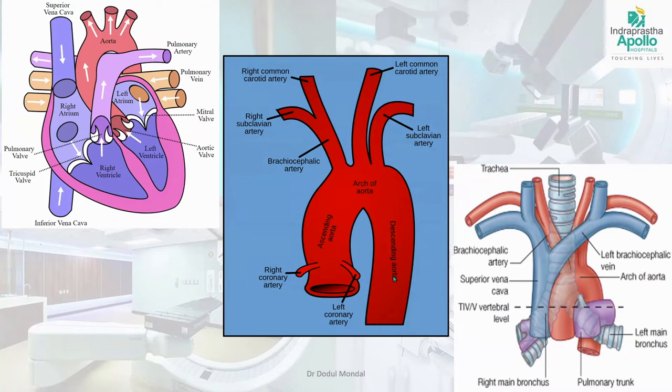Before we start, whatever vascular anatomy we discuss, we should have some basic idea about the cardiac chambers. This is a basic schematic representation of the heart: the right ventricle connected with the right atrium, the left ventricle, and the left atrium. From the right ventricle the pulmonary trunk arises, dividing into left and right pulmonary artery. From the left ventricle, the ascending aorta arises, becoming the arch aorta, then the descending thoracic aorta, then continuing as the abdominal aorta, giving off branches along the way.